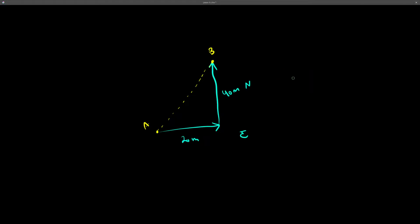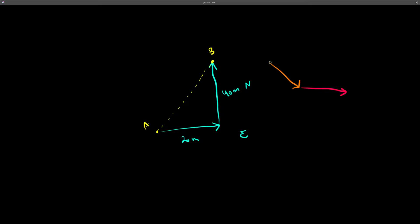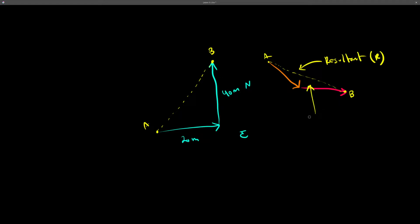Another example of displacement: if we have a vector going like this and another vector going like that, the displacement would be the shortest distance from point A to point B. This line connecting the two points is called the resultant, or R, and in this lesson we focus on calculating the resultant.